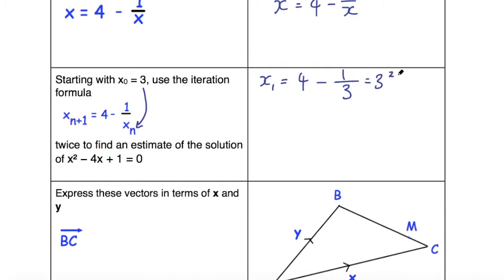So I've just put that 3 in where the x is in the formula, and 4 - 1/3—well, that's going to be 3 and 2/3—and I might change that to an improper fraction. So I multiply the 3 by the 3 and add 2. So 3 times 3 is 9, plus 2 is 11/3.